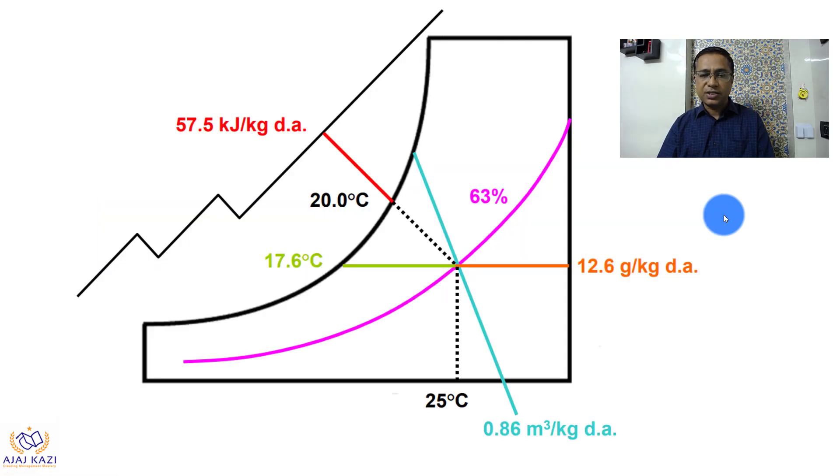So if you look at this, this is 25 degree dry bulb temperature, and this is 20 degree wet bulb temperature. When they intersect, this is the point which they hit. From here we can get a lot of information.